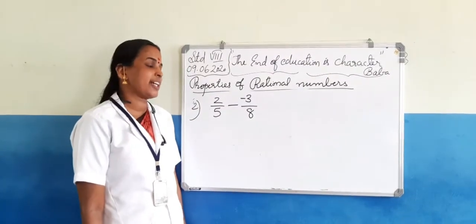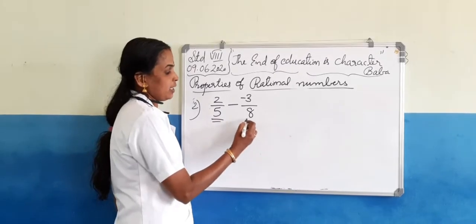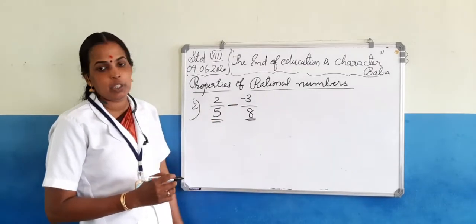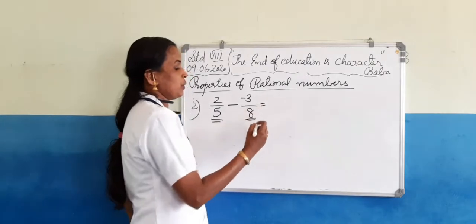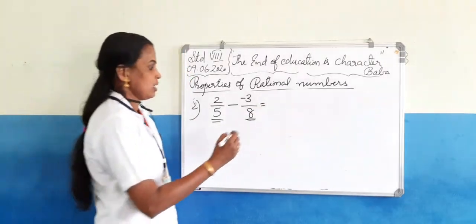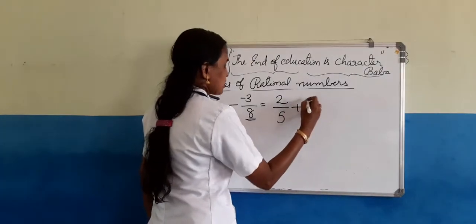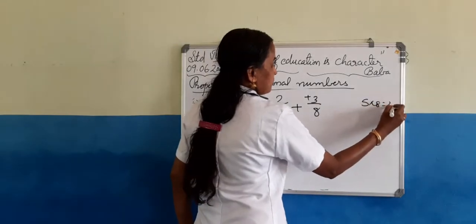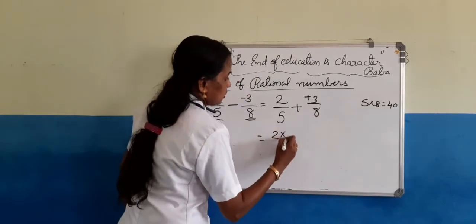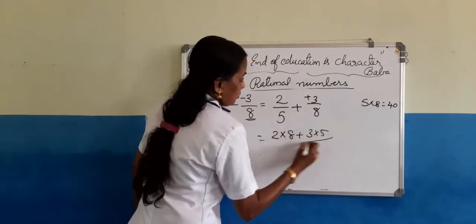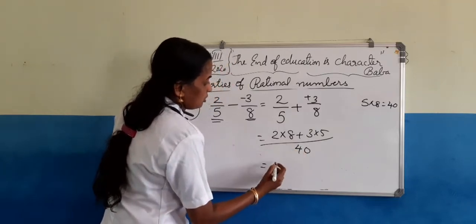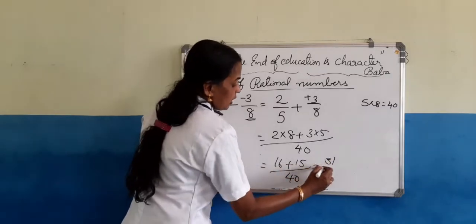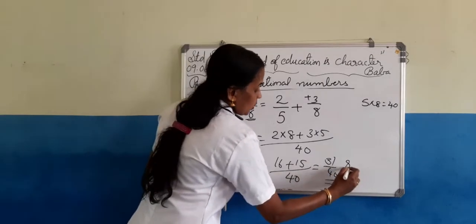Now we can take subtraction of rational numbers. Here 2 by 5 is a rational number and negative 3 by 8 is also a rational number. We subtract these rational numbers, which gives us 16 plus 15 by 40. 16 plus 15 means 31, so the result is 31 by 40, which is also a rational number.